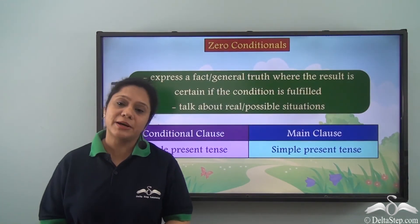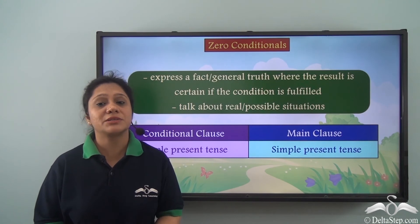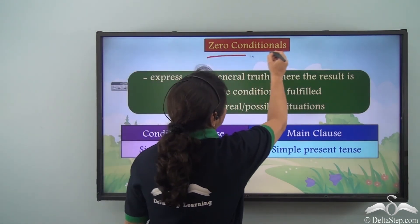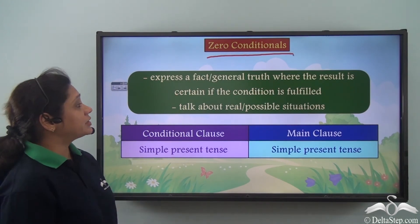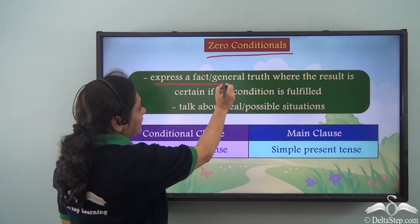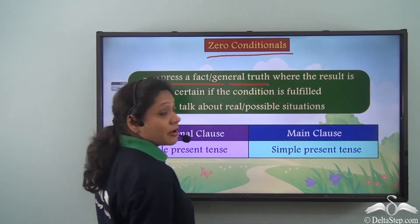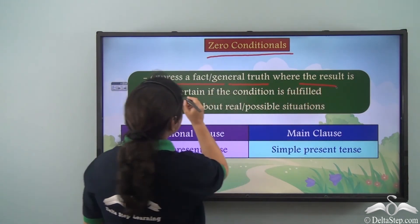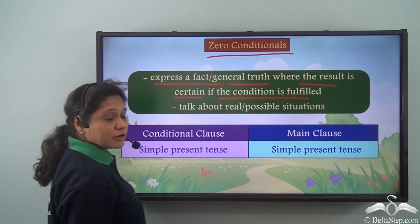So what did we learn today? Today we have learned about zero conditional sentences. Zero conditionals express a fact or a general truth where the result is certain if the condition is fulfilled.